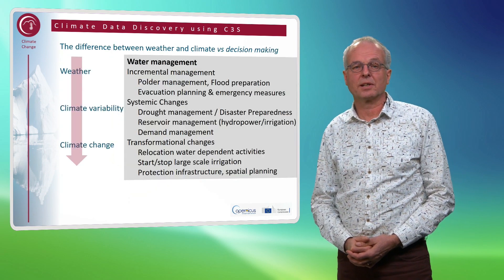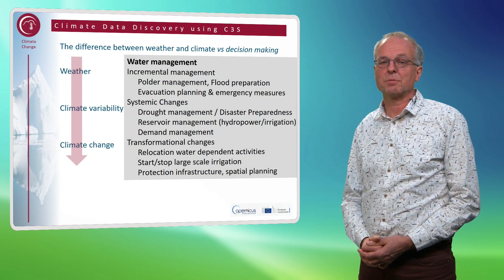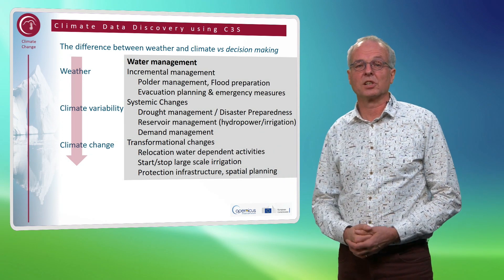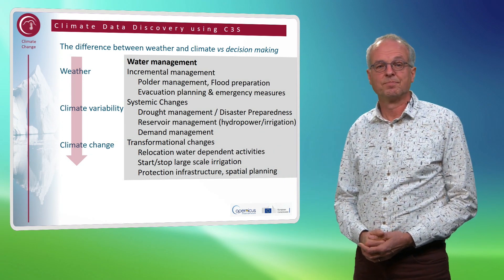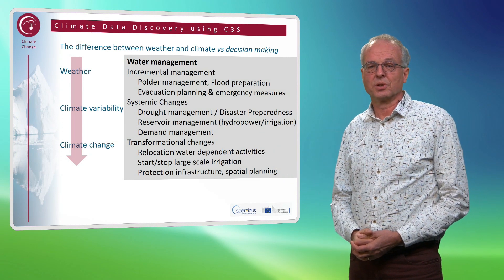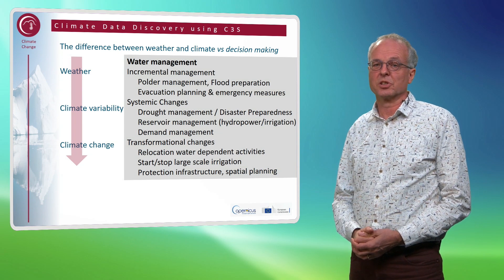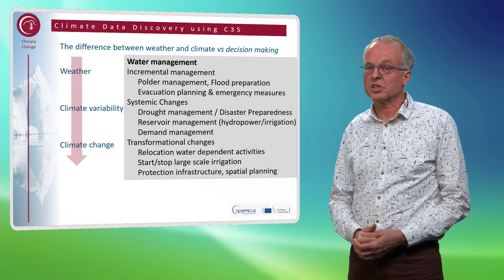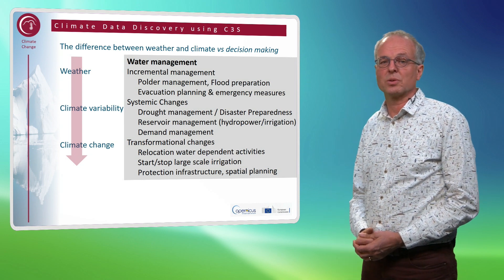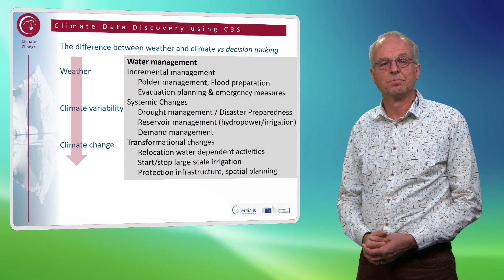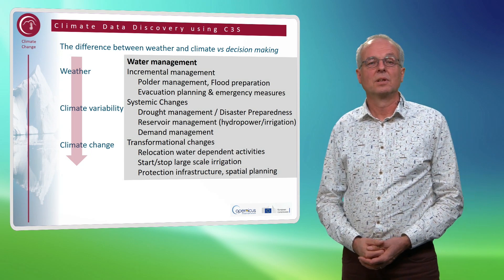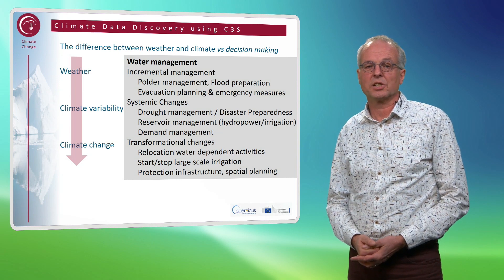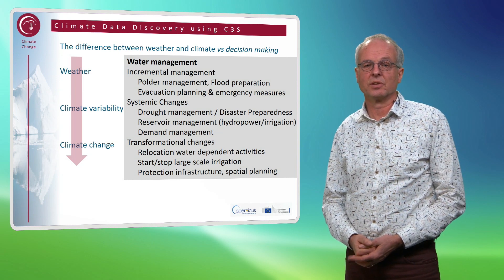This difference between weather and climate is directly linked to the type of decisions that you have to make in the sector that you work in. Here you see some examples for the water sector. Weather is relevant for day-to-day incremental management decisions. Climate variability is relevant for more systemic decisions that allow you to anticipate the coming season. Climate and climate change are relevant for decisions that have a long-term impact, such as large investments of a more transformational nature.